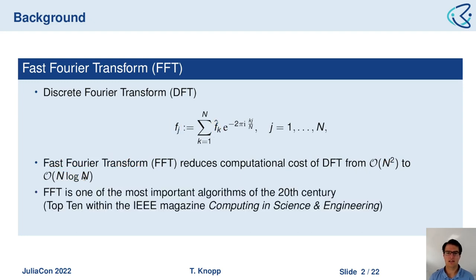The FFT is one of the most important algorithms of the 20th century — it is in the top 10 of the IEEE magazine Computing in Science and Engineering. It really allowed the signal processing community to evolve much more rapidly because we were able to switch between time and frequency space so easily, and it runs on low-cost hardware.